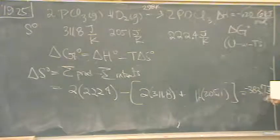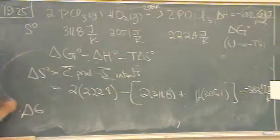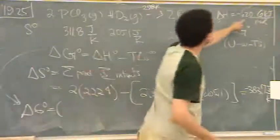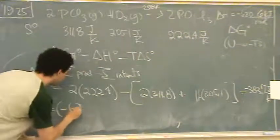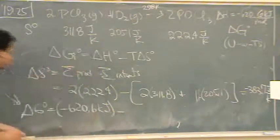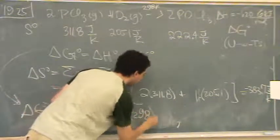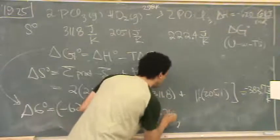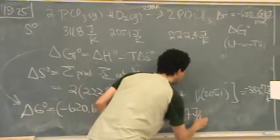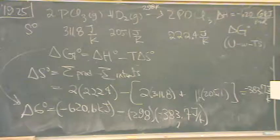And now, you have all the values to find delta G. So, delta G, using this equation, is delta H, which is minus 620.6 kilojoules, minus T delta S, T is 298. And delta S is minus 383.7 joules per Kelvin. There's going to be an issue when I do this calculation. Anybody see it?